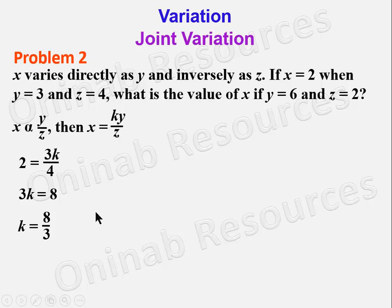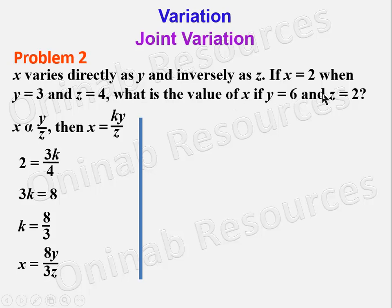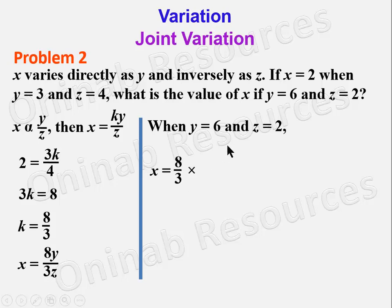The formula is x = 8y/3z. When y = 6 and z = 2: x = (8/3) × (6/2). Since 3 × 2 = 6, the 6s cancel, leaving x = 8/3 × 6/2 = 8. That is the end of the solution to problem 2.